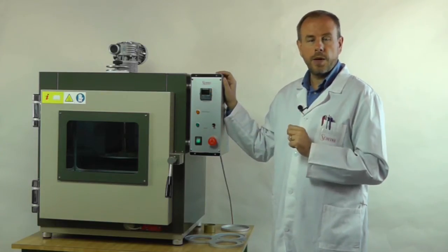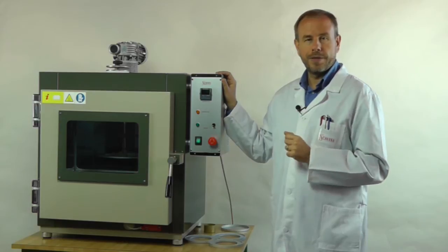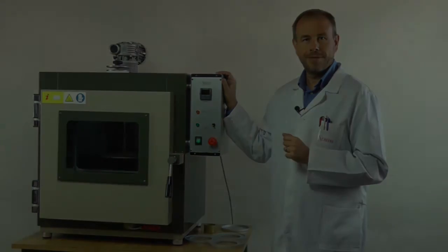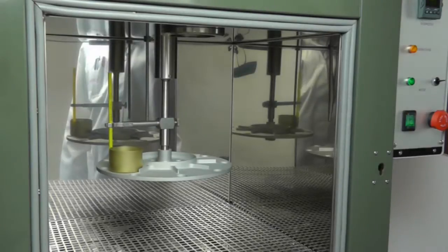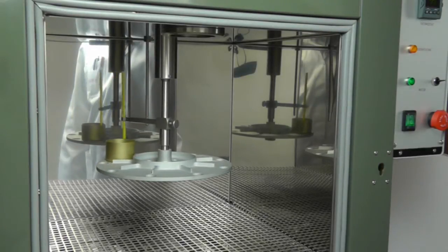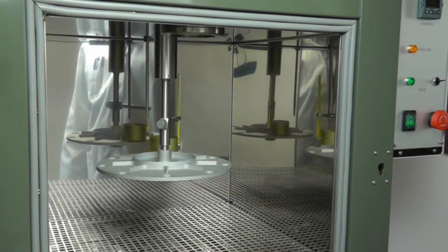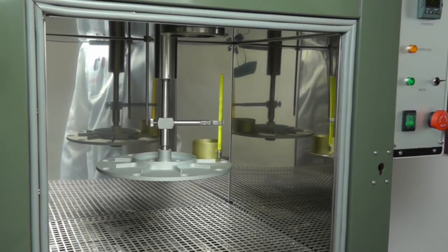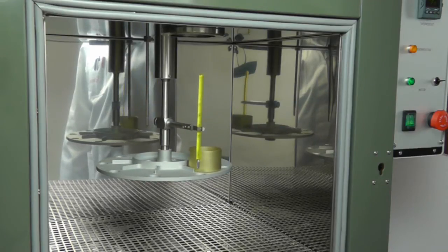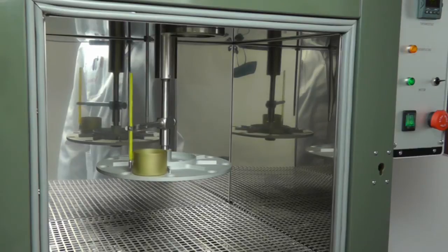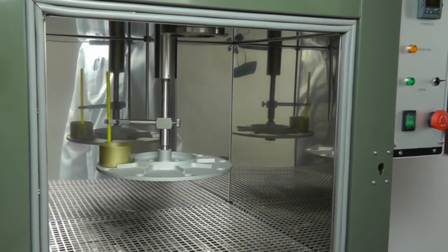But now let's take a look to the inside of the oven. So here we are. This is the inside of the oven with the ASTM D6 shelf in position and rotating. You can see also the sample container and the thermometer.